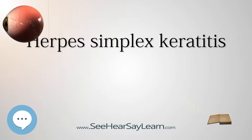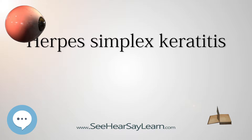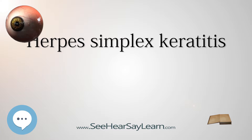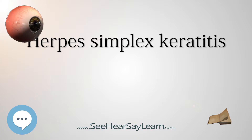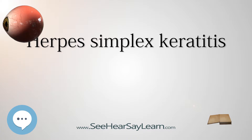Signs and symptoms — Primary infection: Primary infection most commonly manifests as blepharoconjunctivitis, i.e. infection of the lids and conjunctiva that heals without scarring. Lid vesicles and conjunctivitis are seen in primary infection.